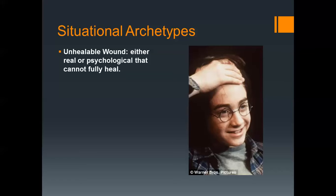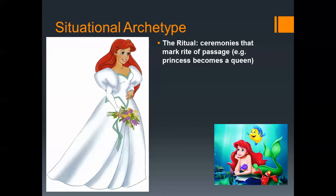Another situational archetype is the unhealable wound — either a physical or psychological wound that cannot be fully healed, and it symbolizes the loss of innocence. Here's a picture of Harry Potter with his lightning scar that his enemy gave him. It is a physical wound that has never healed, and it symbolizes his connection with his enemy and puts him on the path to defeating evil. Then there's the ritual, which is always a ceremony that marks a rite of passage. An example is when a princess becomes a queen — like the Little Mermaid, who leaves her underwater state and gets legs.